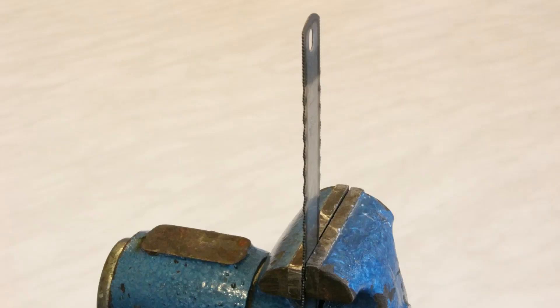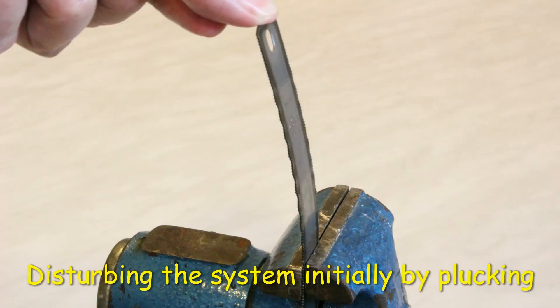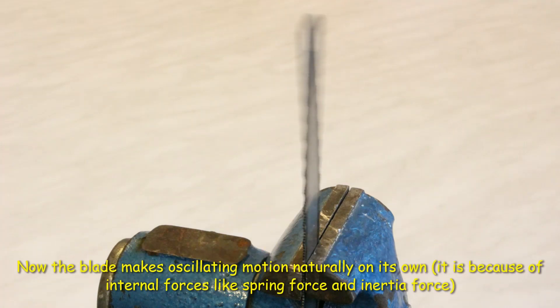You can observe after the initial disturbance to the blade from its stable position, the blade makes oscillating motions naturally on its own. It is basically happening because of the internal forces like spring force and inertia force.